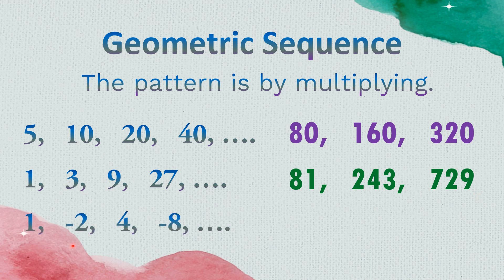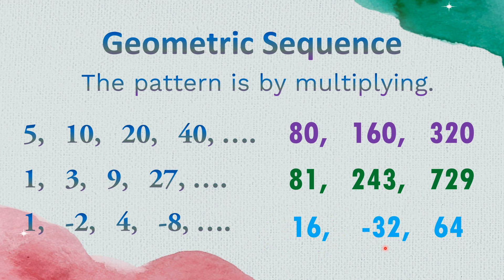Next example: 1, negative 2, 4, and negative 8. If we try multiplying by 2, the number is correct but the sign is incorrect. So the pattern is negative 2. So: 1 times negative 2 is negative 2, negative 2 times negative 2 is positive 4, positive 4 times negative 2 is negative 8, negative 8 times negative 2 is positive 16, positive 16 times negative 2 is negative 32, negative 32 times negative 2 is 64. As you can see, the sign alternates positive, negative, positive, negative. The pattern of this geometric sequence is negative 2.